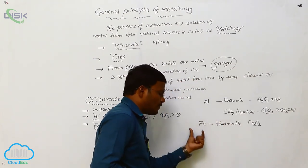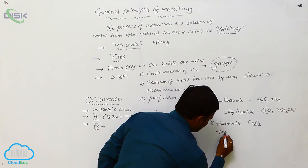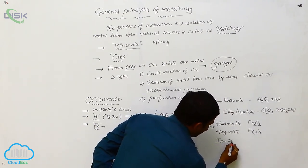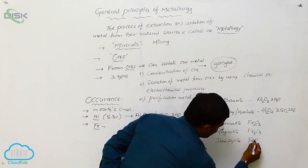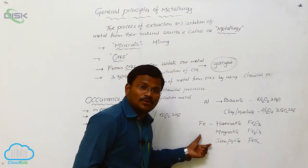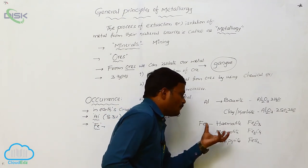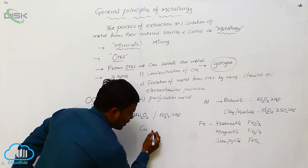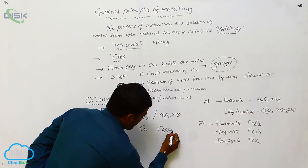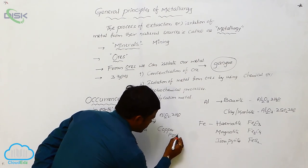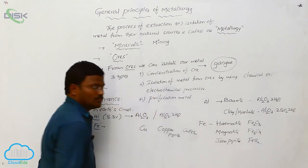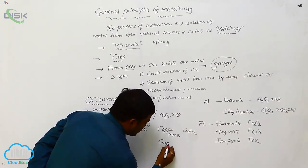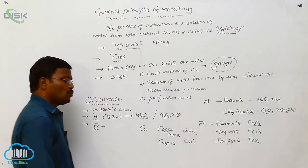Hematite is a mineral of iron. Similarly, magnetite has the molecular formula Fe₃O₄. Iron pyrites is represented as FeS₂. These are some examples of minerals and ores from which we can isolate iron. In the case of copper, the available minerals in Earth's crust include copper pyrites (CuFeS₂) and cuprite (Cu₂O), which is cupric oxide.